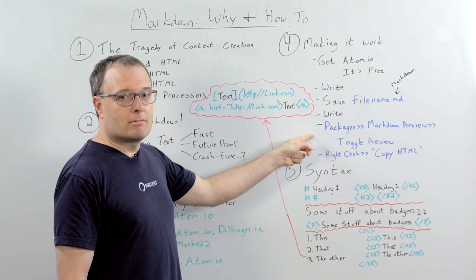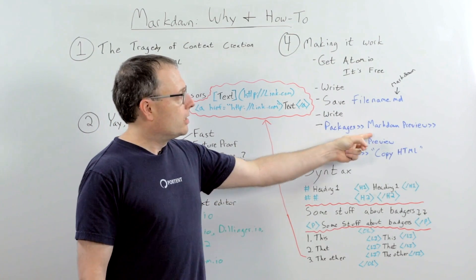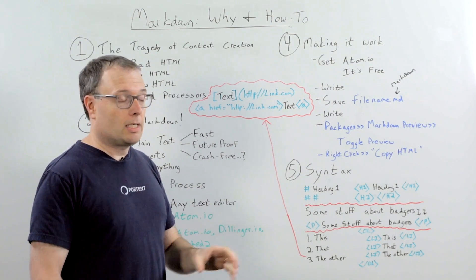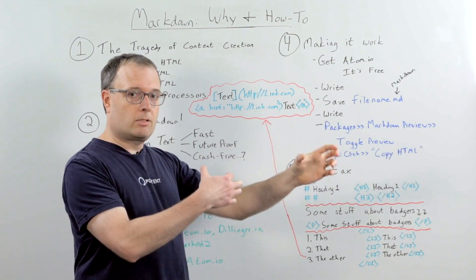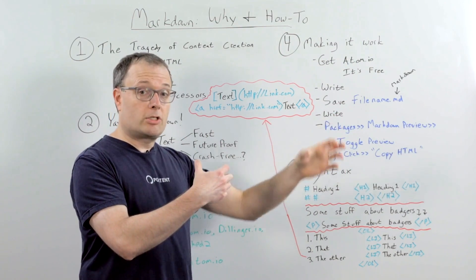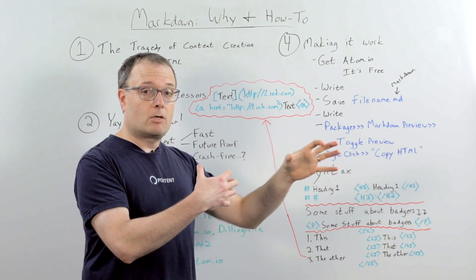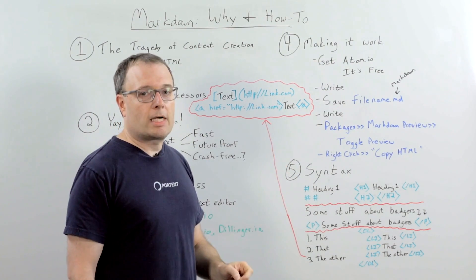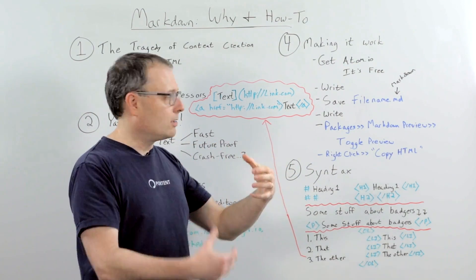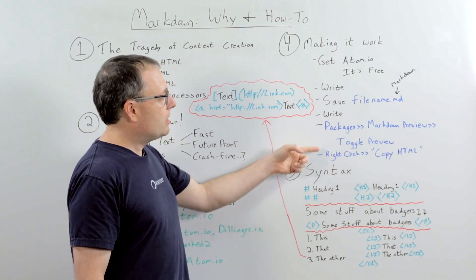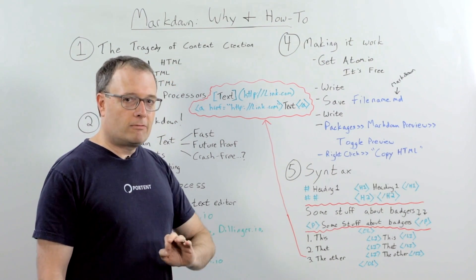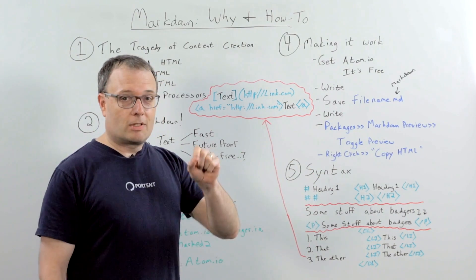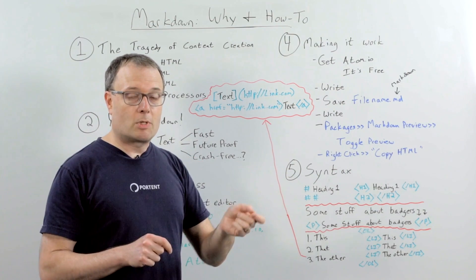Then, you go to Packages in the menu. You click Markdown Preview, and you click Toggle Preview. Now, you can do that at the very start, and then what you'll have is two parallel panes, where in one pane, you're doing your writing, and in the other one, it's showing you exactly how the page is going to look. Or, you can just do it at the end. I do it at the end because it's distracting. I don't like seeing how it's going to look at the same time. You right-click in that preview. You click Copy HTML, and you'll have flawless HTML. I mean flawless.